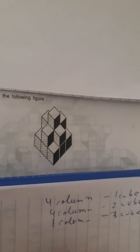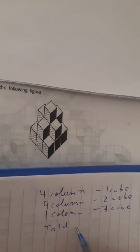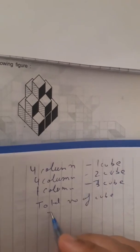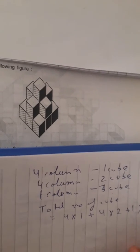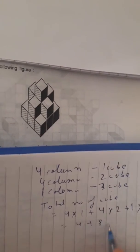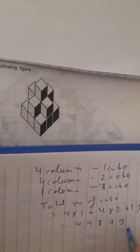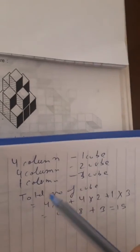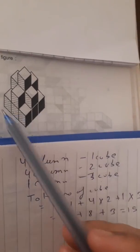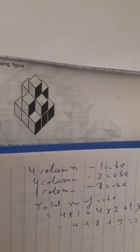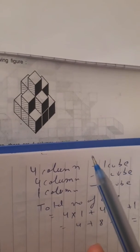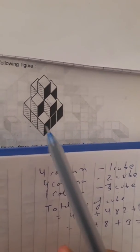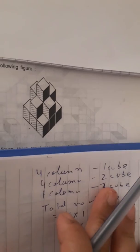So the total number of cubes will be: four into one, plus four into two, plus one into three — that is four plus eight plus three, which equals fifteen. In this way you can find the number of cubes for any given figure. Check out my next series two and three for even more complex figures.